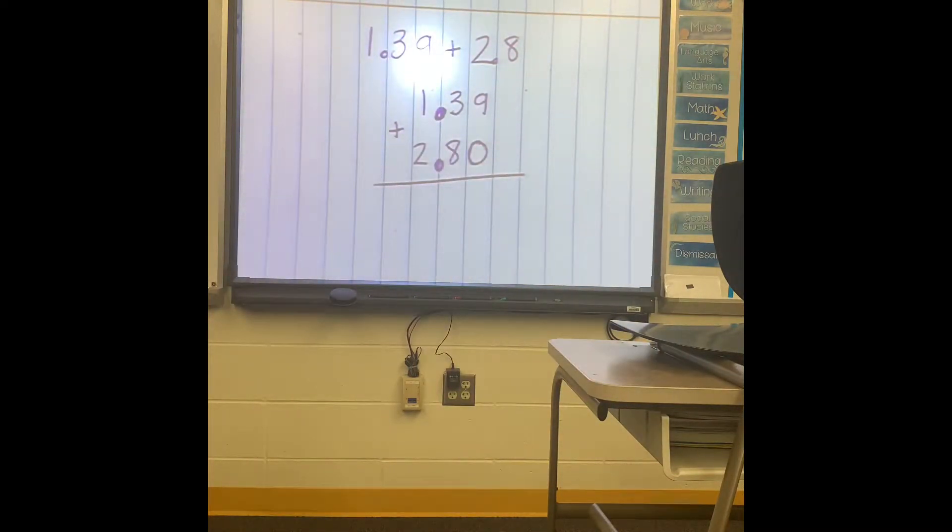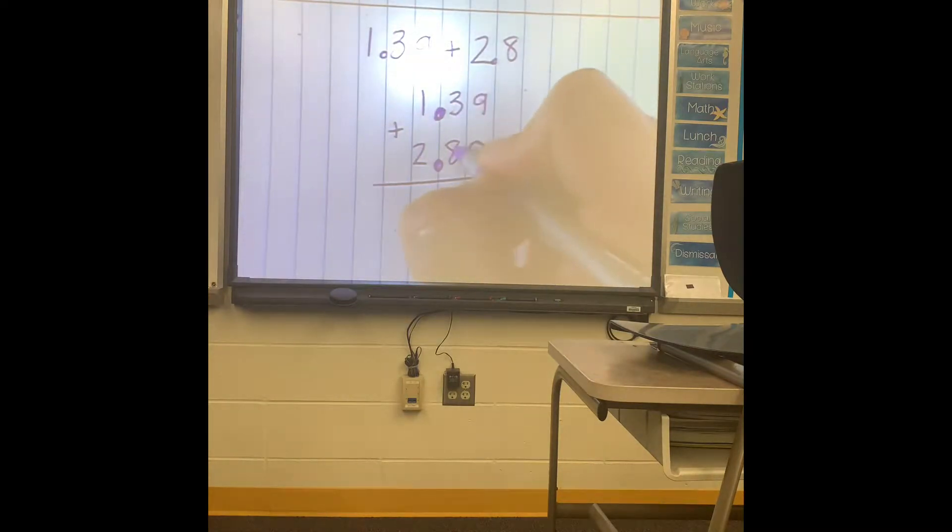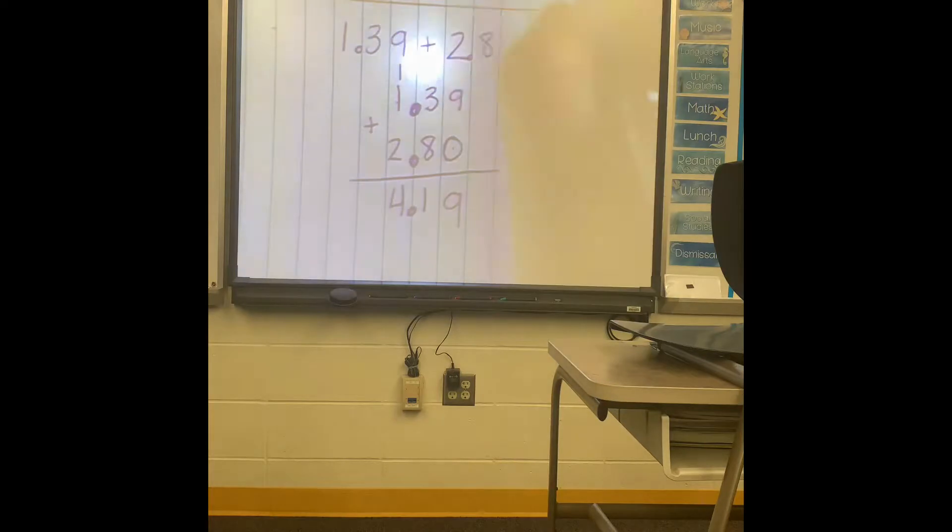And do you see how I have a blank? I need to put a zero there. I have to make sure that every number needs a partner. Now I can add. 9 plus 0 is 9, 8 plus 3 is 11, and then 2 plus 1 is 3 plus 1 is 4. Bring down your decimal, and your answer is 4.19.